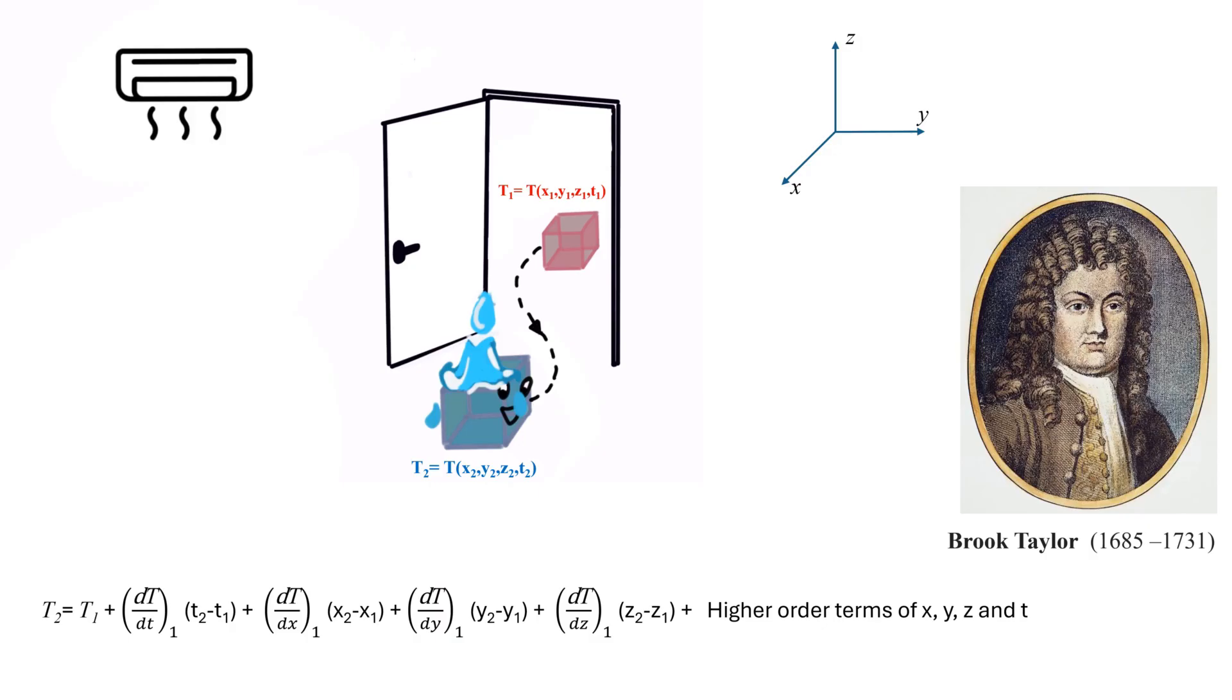In our parcel's case, we consider instantaneous time and corresponding change in space, which makes the changes more linear. So, we can also neglect the higher-order terms in the Taylor series.